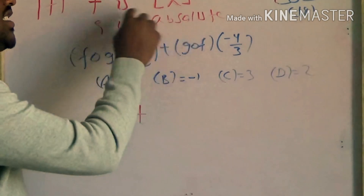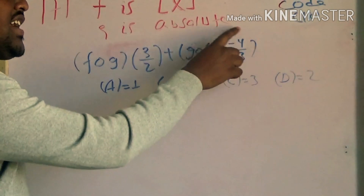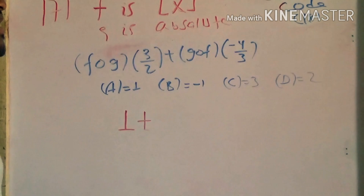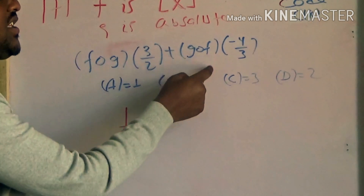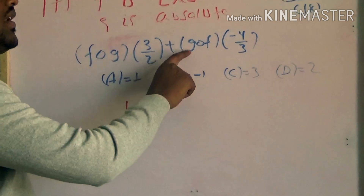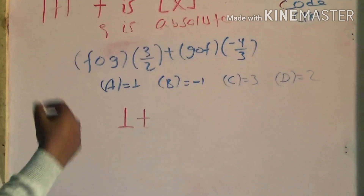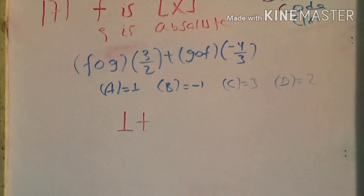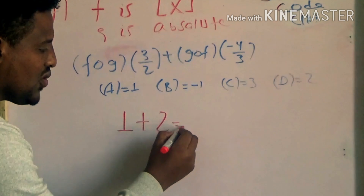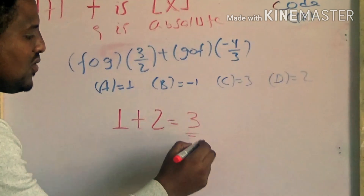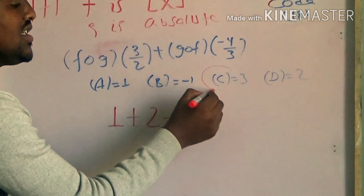The greatest integer function of negative 4 over 3 is negative 2. Now negative 2 enters the absolute function. The absolute value of negative 2 is equal to 2. So 1 plus 2 equals 3. Therefore, the answer is 3.